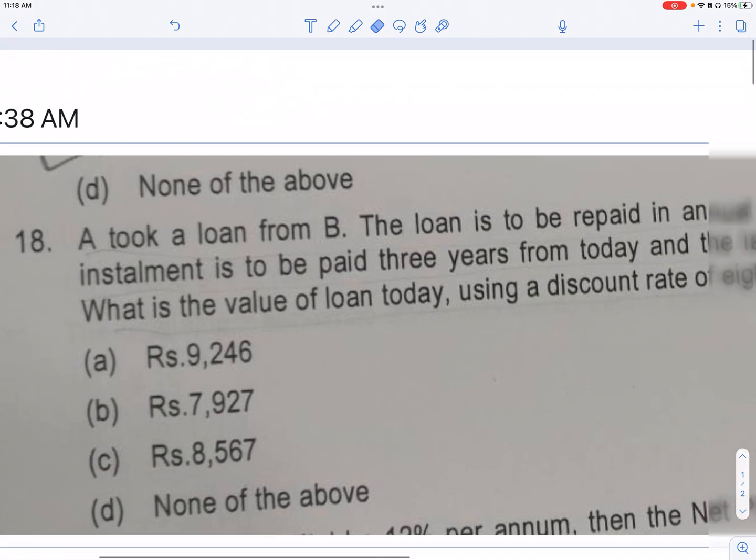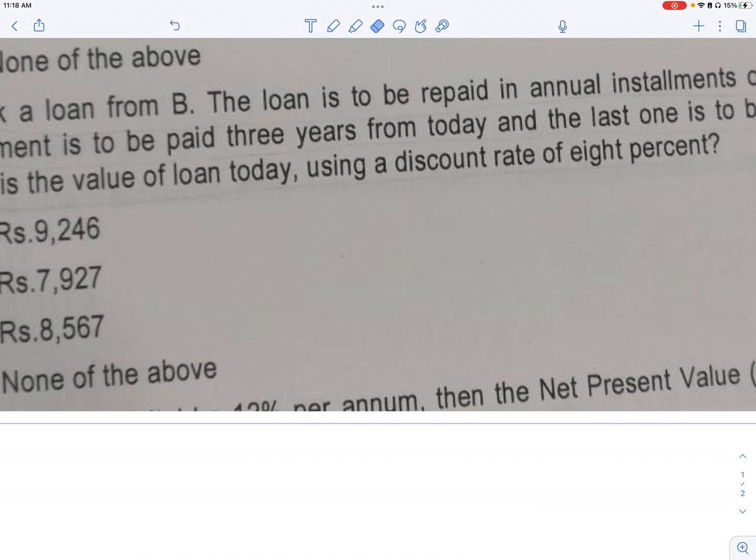And now rate of interest, what's the discounting rate? Eight percent. So basically what we have to do? Eight percent discounting factor.